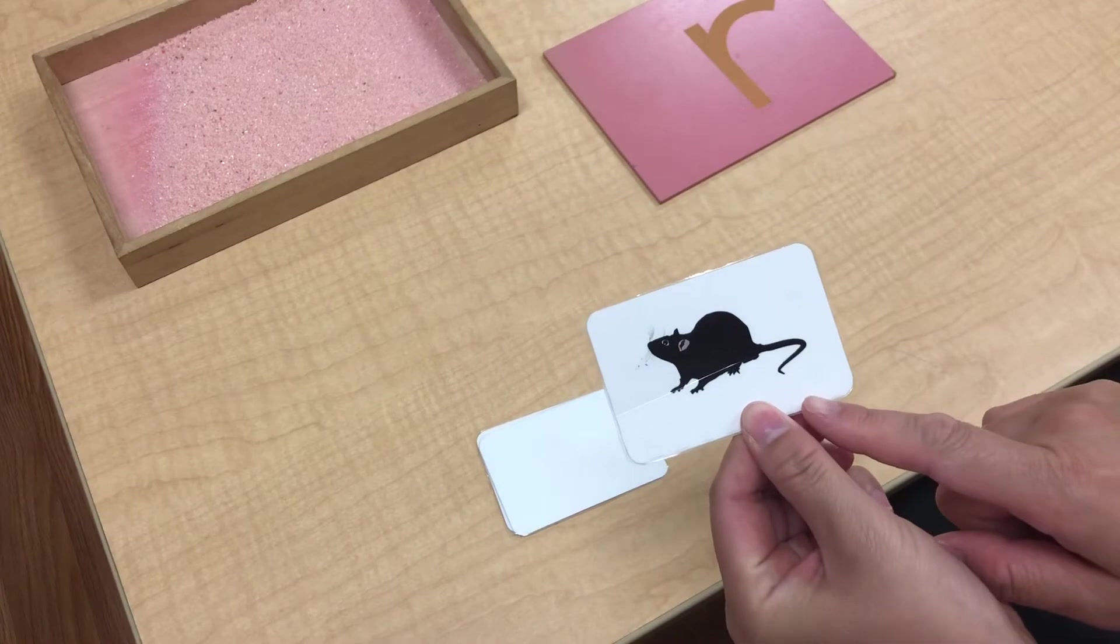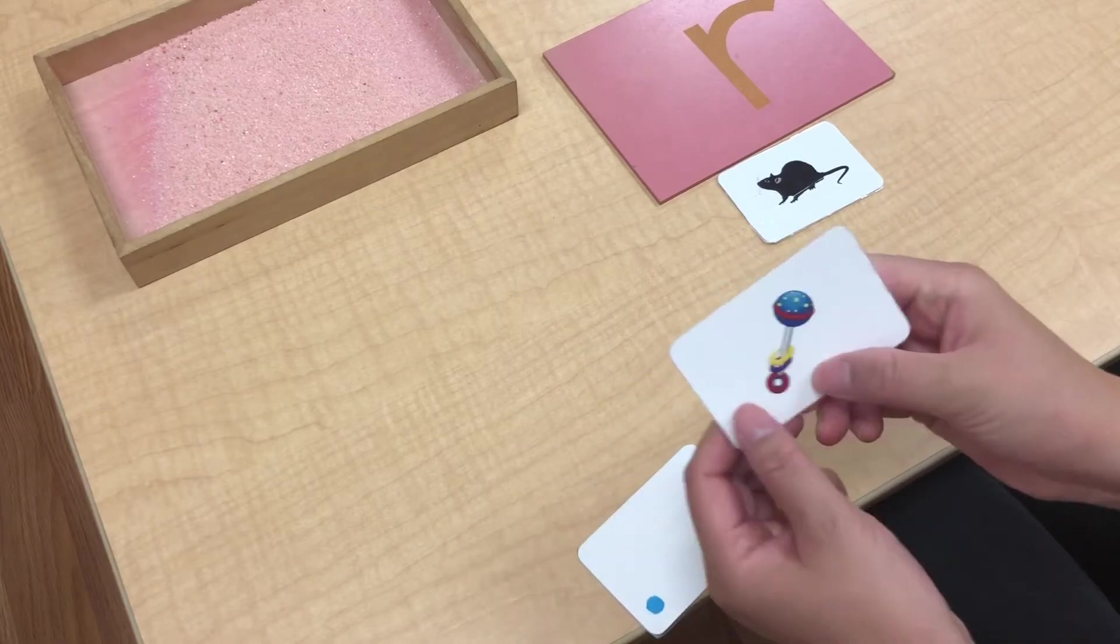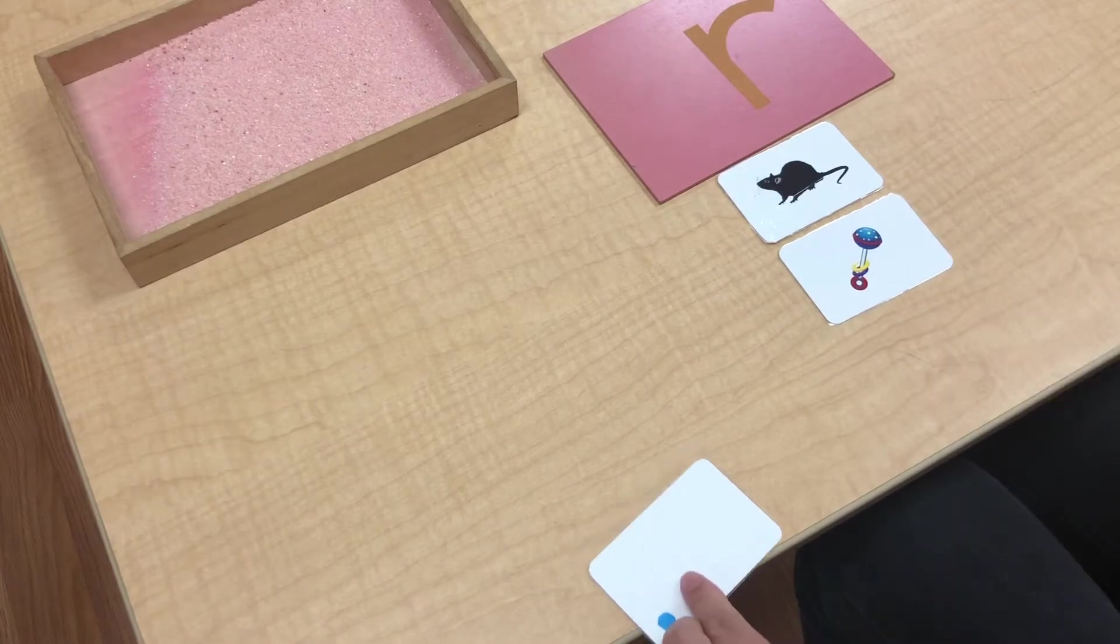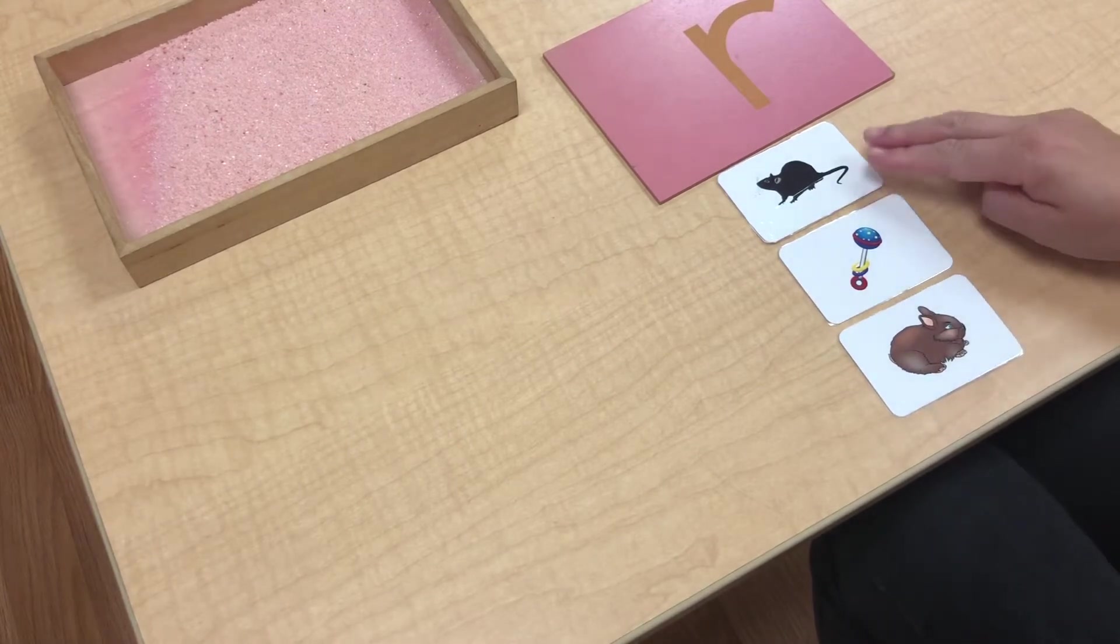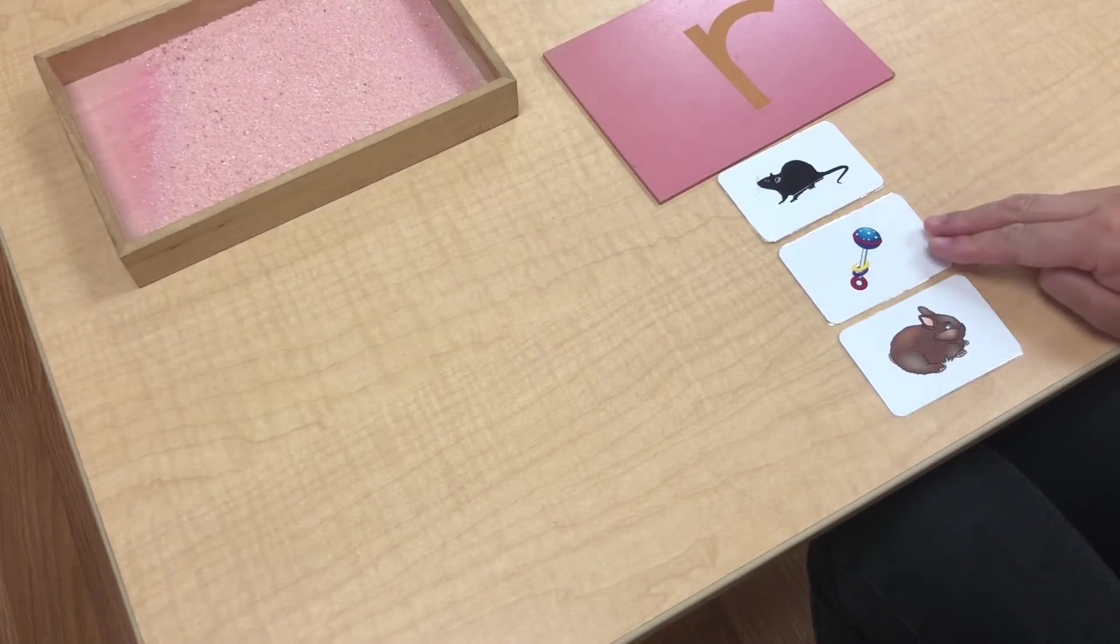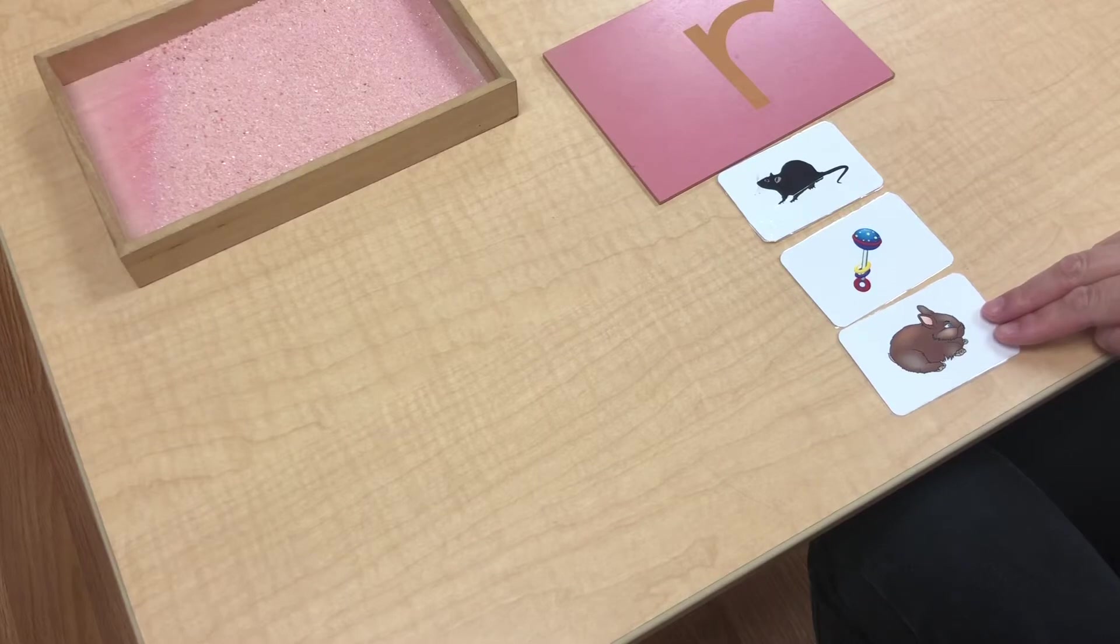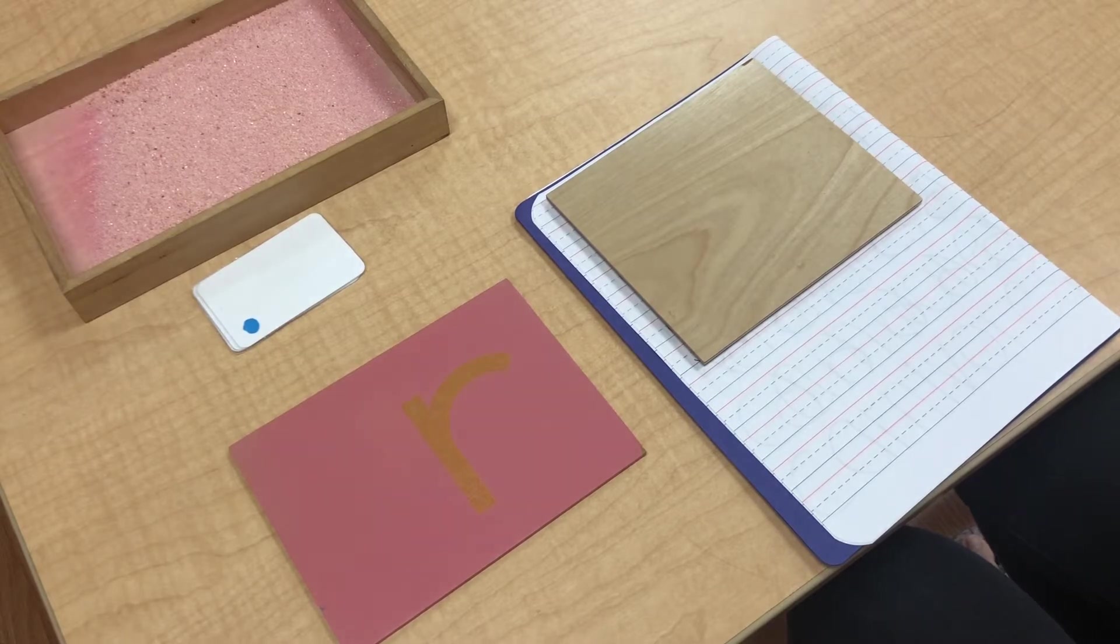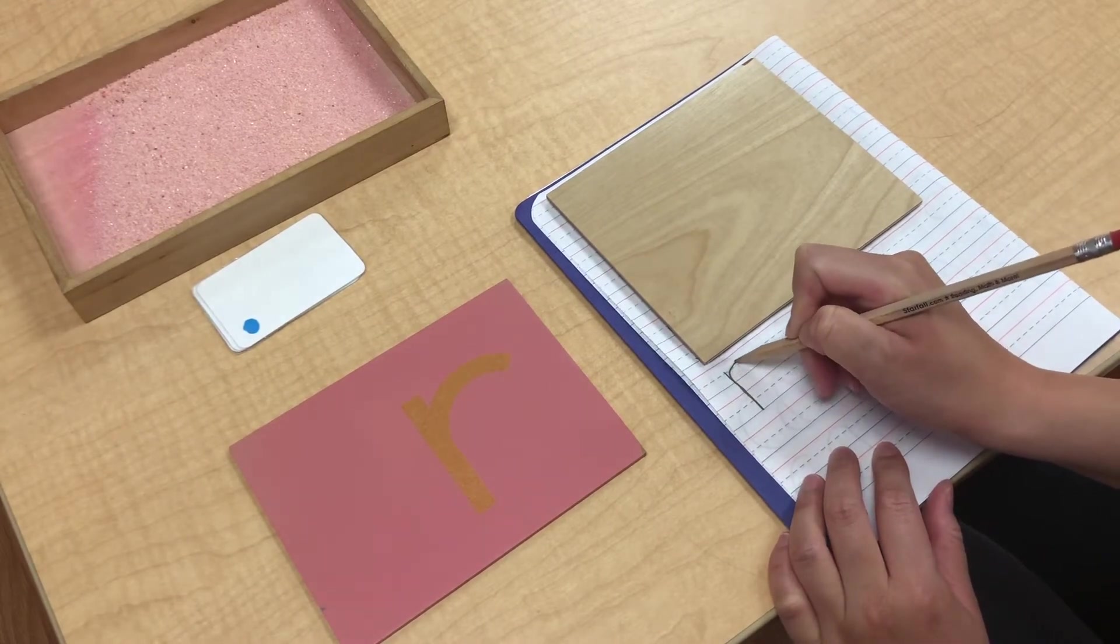R. Rattle. R for rat. R. Rattle. Words beginning with R include rat and rattle.